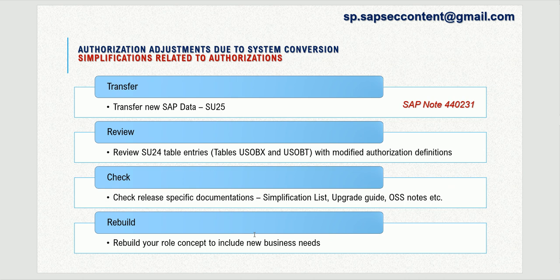Now let us go through the overall high-level view of the steps to upgrade authorizations. The first step is to transfer new SAP data on authorization definitions from applications using transaction SU25. You can refer to OSS note 440231, which contains important information about how to use SU25. SAP delivers standard authorization objects in tables USOBX and USOBT, which are maintained via transaction SU22.